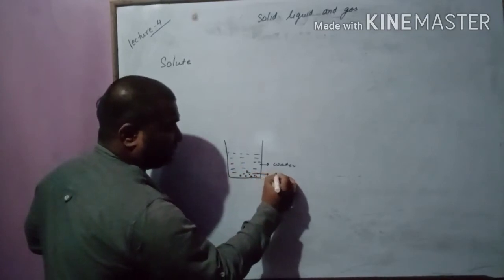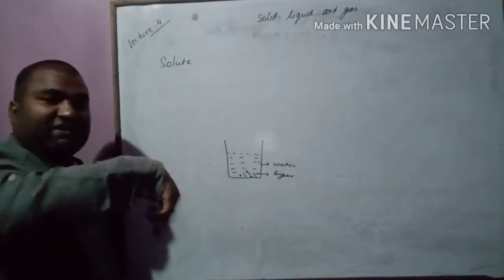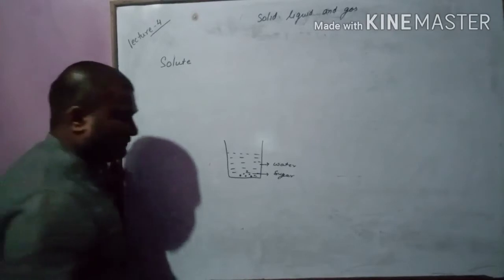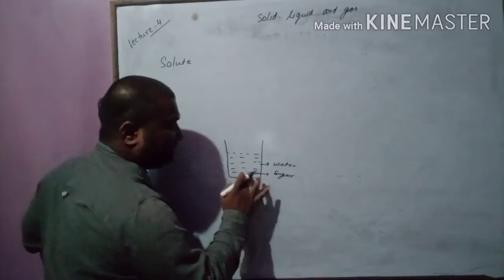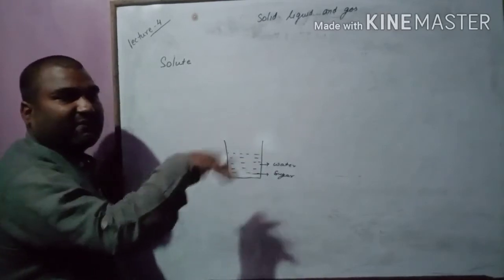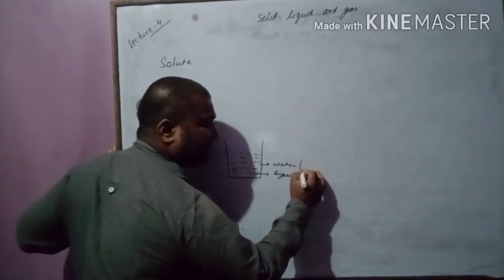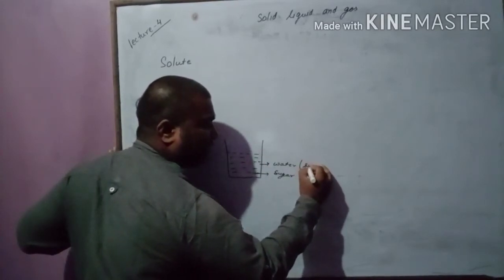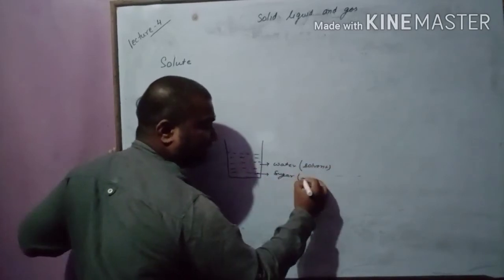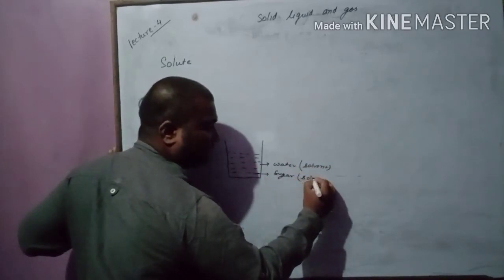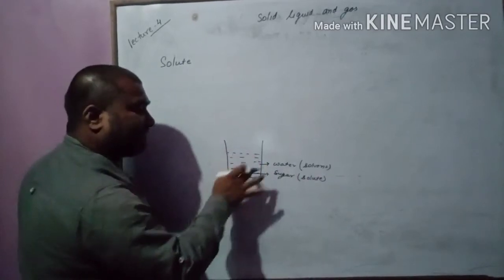This is sugar. You mix it properly. After some time you will see that the sugar disappears — it gets mixed into the water. So the water that we have taken is called the solvent, and the sugar that is taken is called the solute.